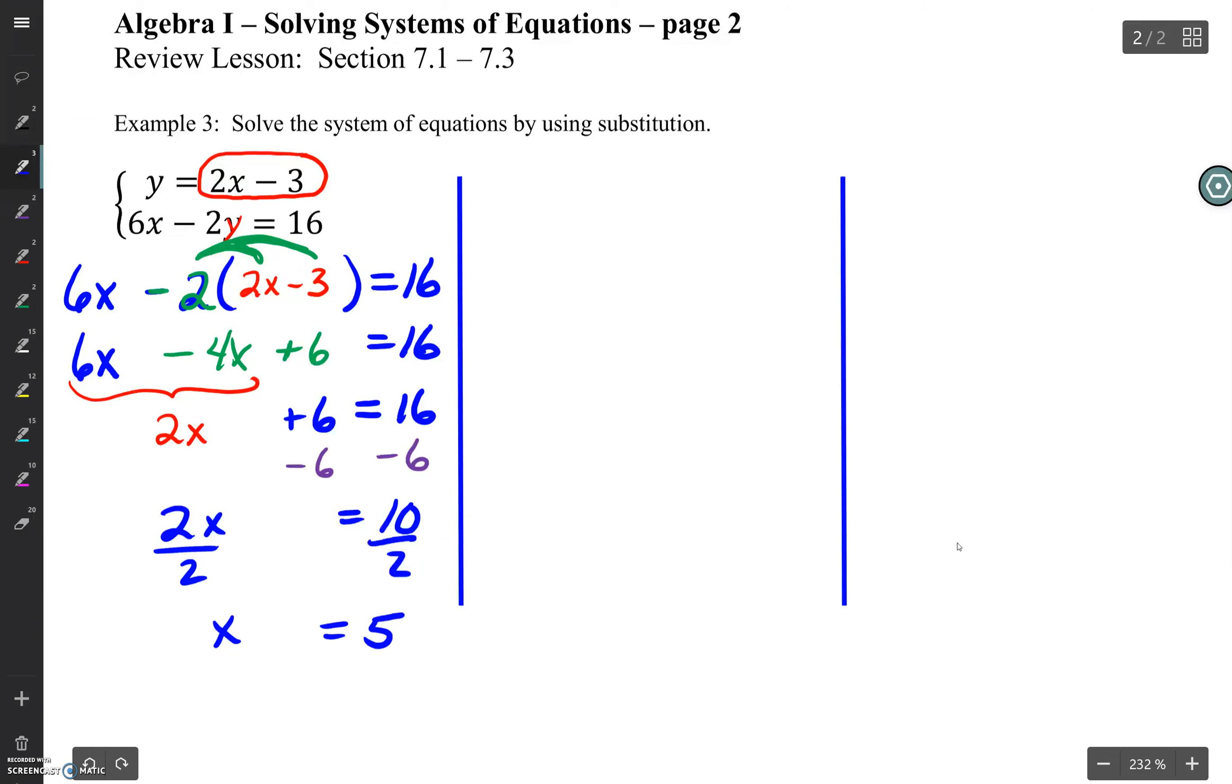We are now one-third of the way through the problem. Now we go back to the original problem. I'm going to look at these two original equations. I need to find the value of y, so I'm going to use equation 1, y equals 2x minus 3. We need to think, what is the value of x? So let's plug in that value of x, and that value is 5.